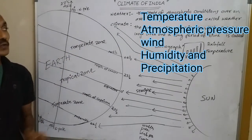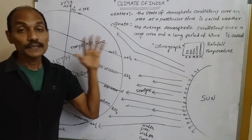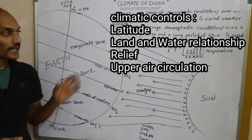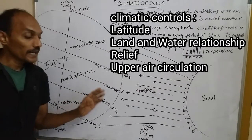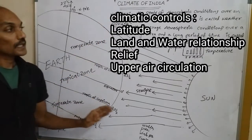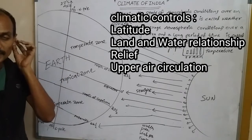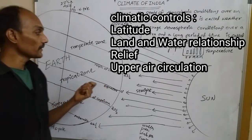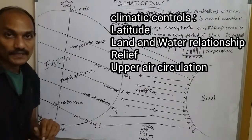We also need to know about climatic controls — what are the factors that control weather and climate. The climatic controls are: latitude, land and water relationship, relief, and upper air circulation.